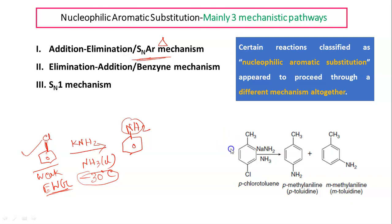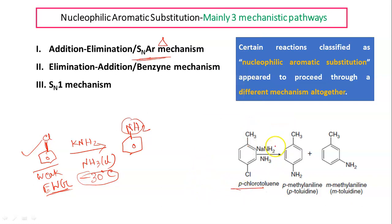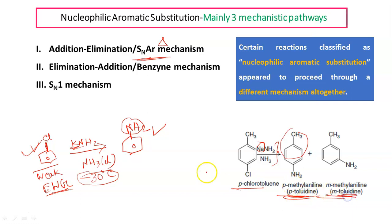In another reaction, para-chlorotoluene is taken under the same conditions, except sodium salt is used instead of potassium salt. Here we get two different products: one is para-substituted and another is meta-substituted. With simple chlorobenzene we got just one product, but here we get two. The chlorine is at position 1,4 with respect to CH3, so our expectation would be only the para product, but we also get the meta product. To understand this, we must examine the mechanism in detail.